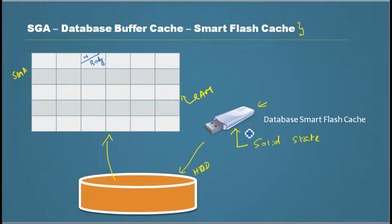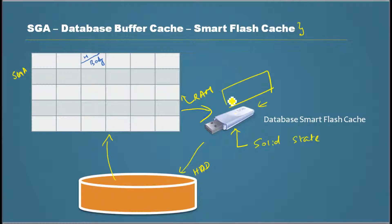However, if we connect smart flash devices, we can make use of them as an extension to the database buffer cache. We can configure Oracle to use the space available in this device as an extension to the database buffer cache. In that case, what happens is Oracle stores the header buffer information here, and the content — the body — will be stored here on the flash device.